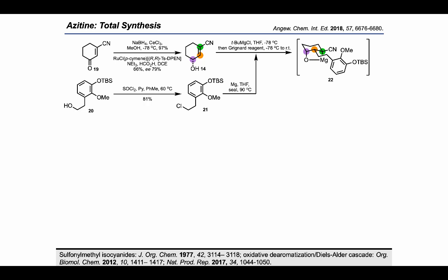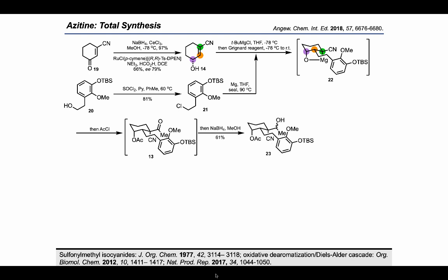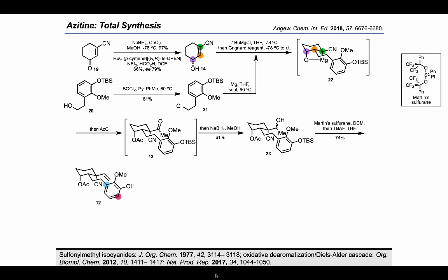Compound 14 can be achieved using Luche reduction, and asymmetric hydrogenation can afford compound 14 in moderate yield and anti-selectivity. The tandem addition of Grignard reagent followed by trapping with acetyl chloride afforded intermediate 13 in excellent selectivity and good yield. However, isolation of pure 13 proved problematic due to impurities from the Grignard reagent. So, sodium borohydride was added sequentially to the reaction mixture to afford a mixture of secondary alcohol 23 in 61% yield. Dehydration by Martin sulfurane worked very well, followed by TBS deprotection to give compound 12 in 74% yield.